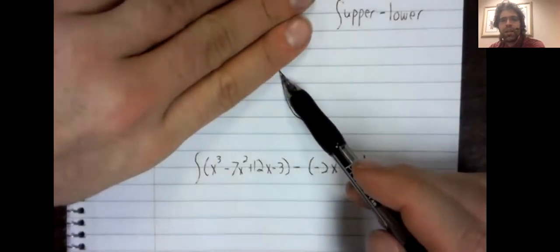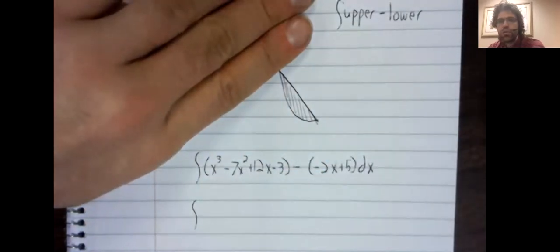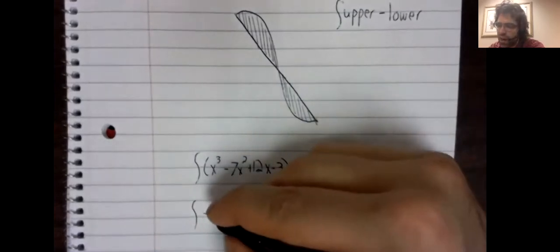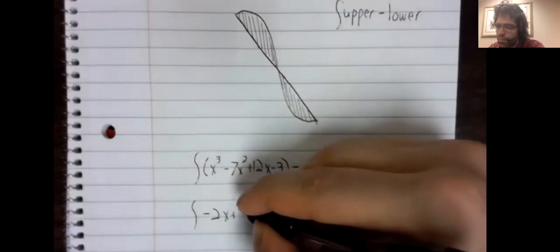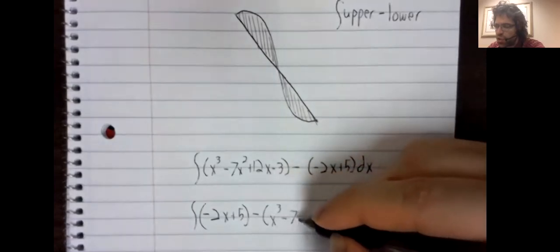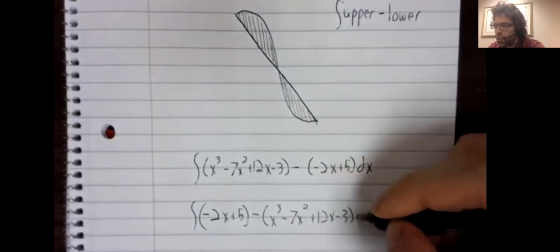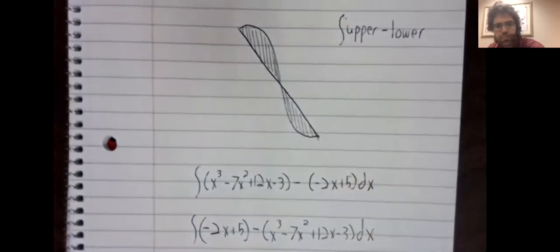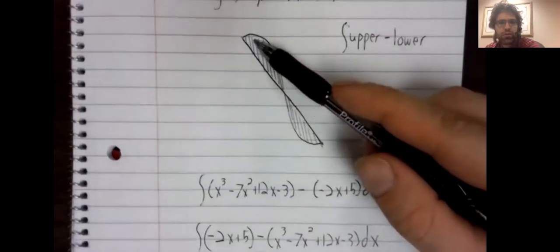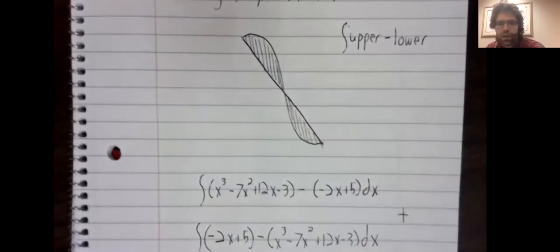When we find the area of this region, our upper and lower curves have switched roles. Now this negative 2x plus 5 is upper, and this cubic is lower. We'll find these integrals. The first is this area, the second is this area, and we'll add them together.